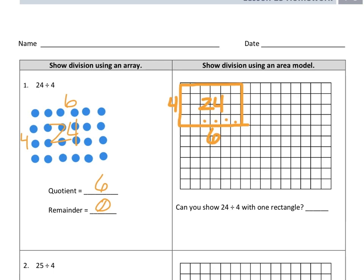So 24 divided by 4 equals 6 and it asks can you show 24 divided by 4 with one rectangle? Yes, we only needed one rectangle to show that. Let's take a look at problem number 2.